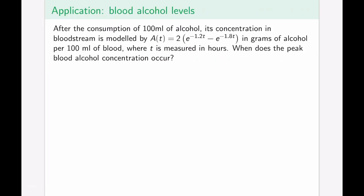For our final application, we consider the exponential model of blood alcohol levels. After consumption of 100 milligrams of alcohol, its concentration in the bloodstream is modeled by a given function, measured in grams of alcohol per 100 milligrams of blood, where T is in hours after initial consumption — assuming no additional alcohol is consumed. The question is: when does the peak blood alcohol concentration occur?